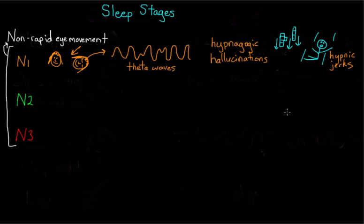And then we move into N2, which is a slightly deeper stage of sleep. Although it's still pretty easy to wake up someone in N1, people in N2 are harder to awaken. We see more theta waves, as well as something called sleep spindles and K-complexes.